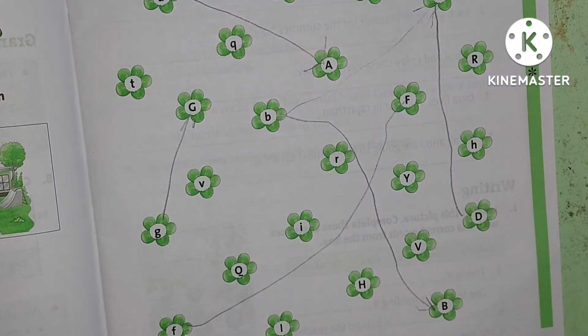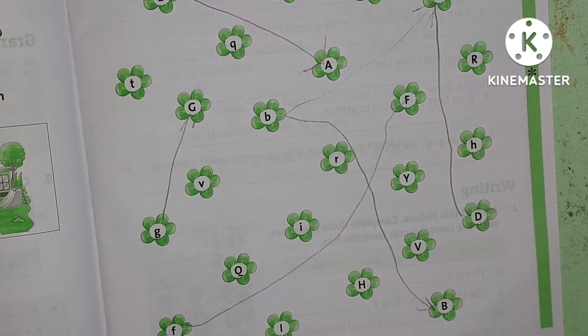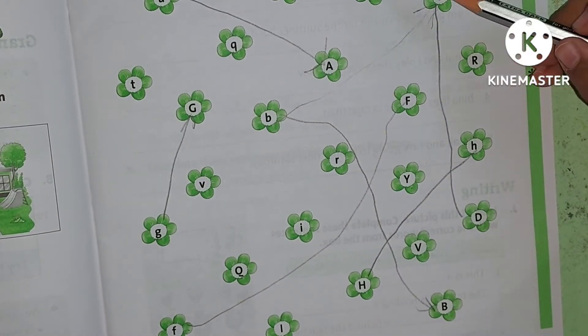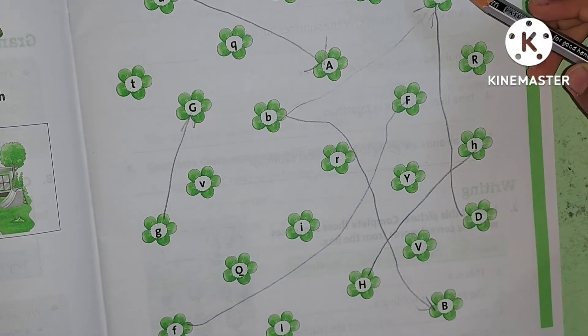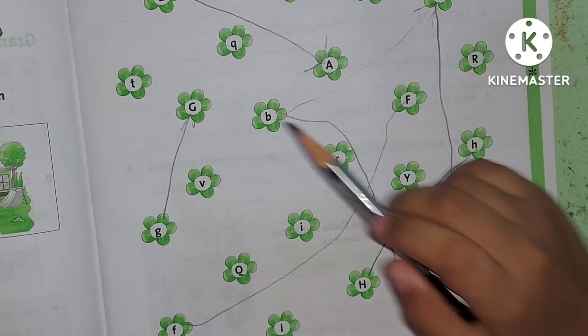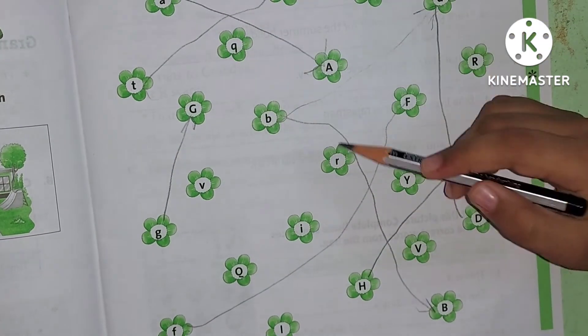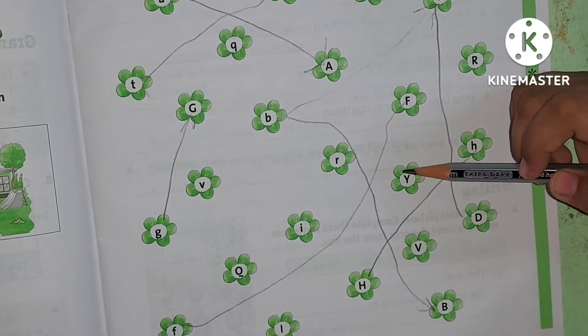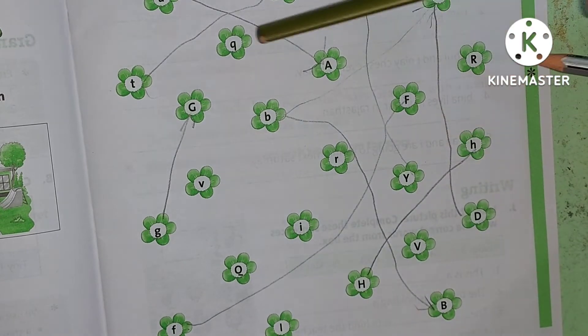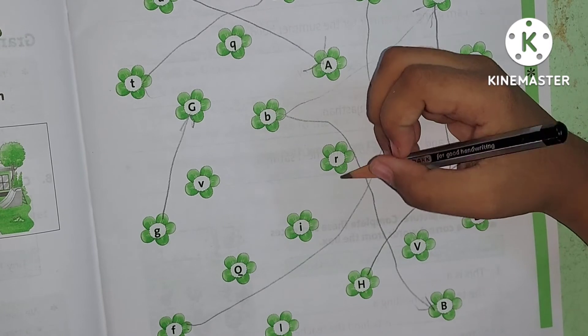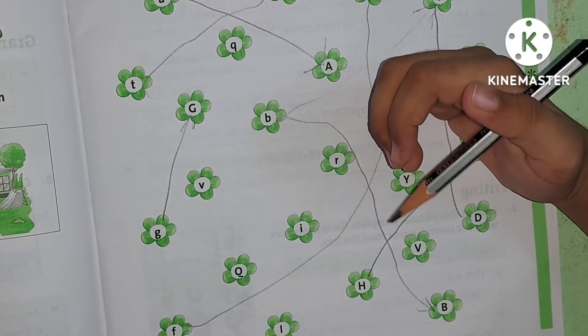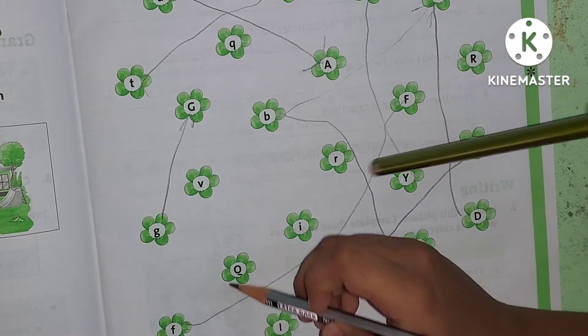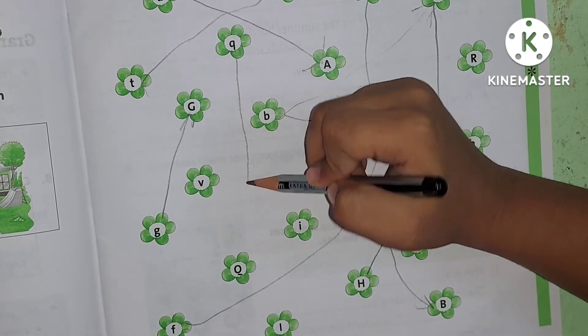Now E. Next T. Next Y. Find the big Y. Next Q. Small Q to big Q. Q.